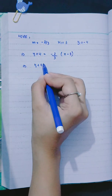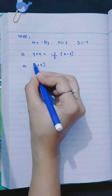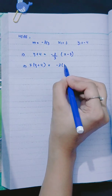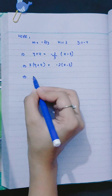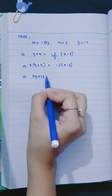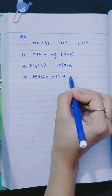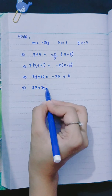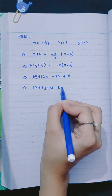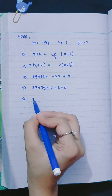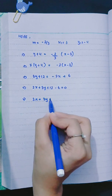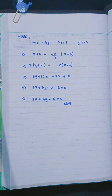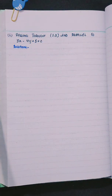Multiplying both sides by 3: 3(y + 4) equals minus 2(x minus 3), giving 3y + 12 equals minus 2x + 6. Rearranging: 2x + 3y + 6 equals 0. This is the required equation for part 1.